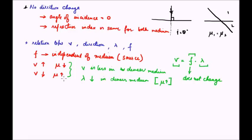This change in wavelength results in a change in direction. The change in speed or wavelength ultimately results in the change in direction when moving from a rarer to a denser medium, and the other way around. So we have now seen the relation between these terminologies.